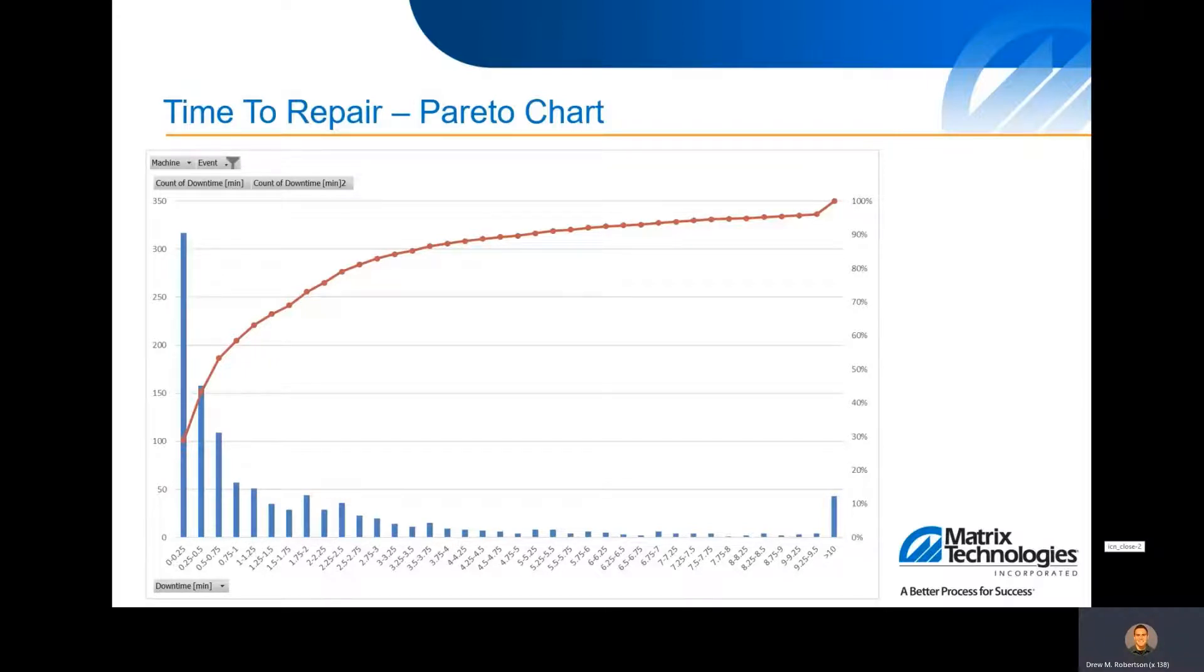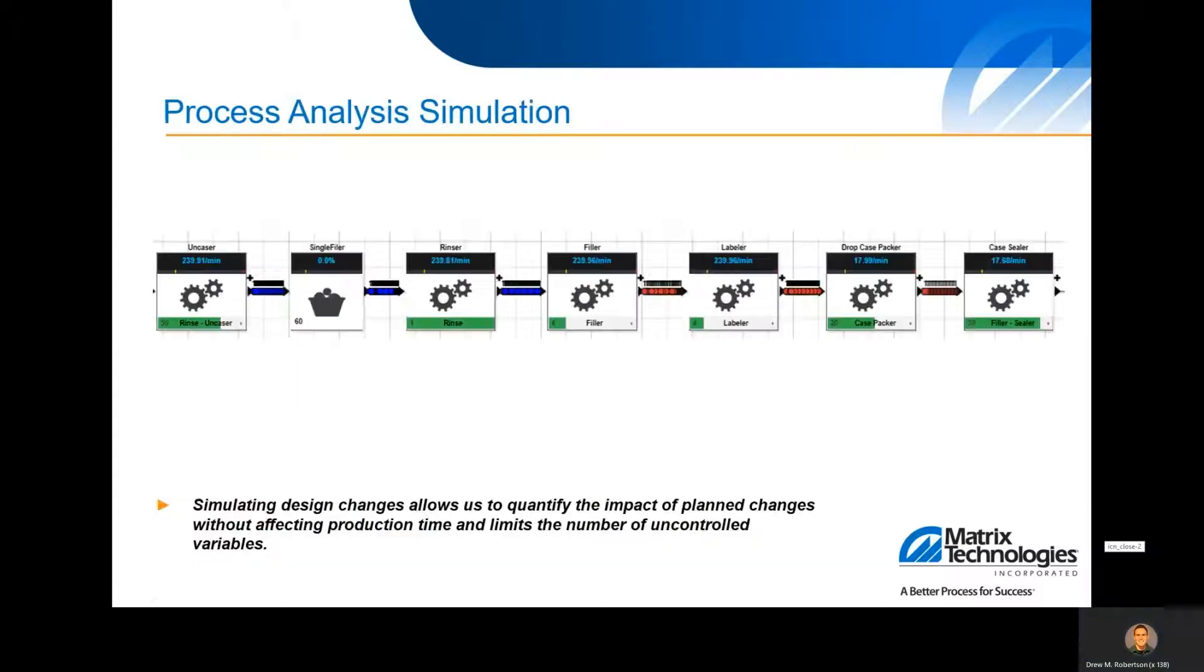So this kind of tells you that if you can get two minutes of accumulation or buffer between pieces of equipment, you're going to get a lot of those events taken care of and covered so that when your labeler goes down, it's not immediately taking out the filler. You have two minutes before you start taking down other pieces of equipment and affecting the overall effectiveness. And ideally, you would want infinite accumulation, but for cost and space issues, that's rarely ever feasible.